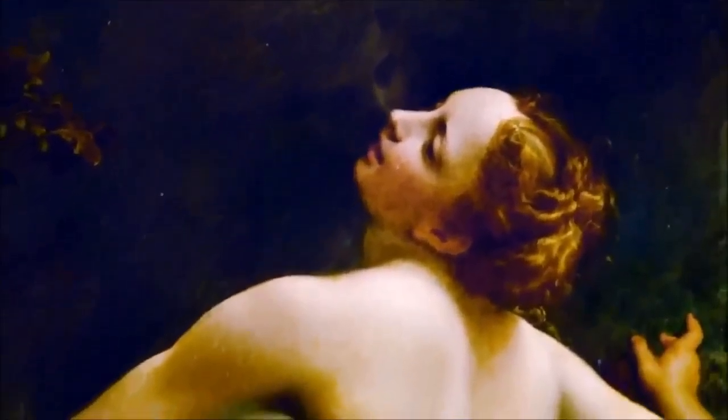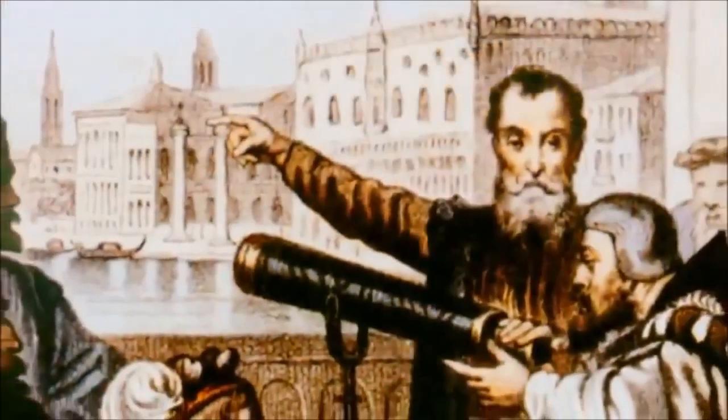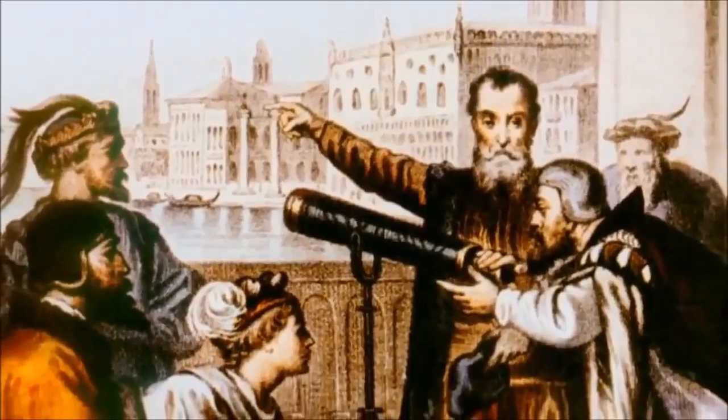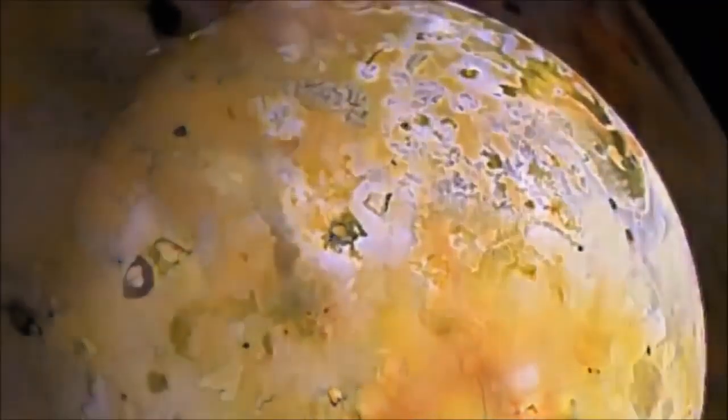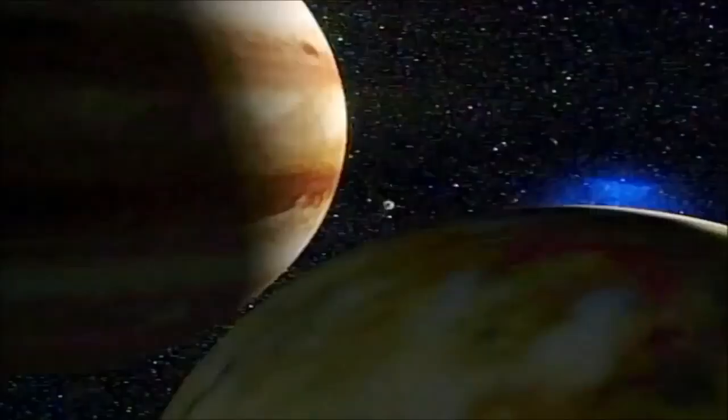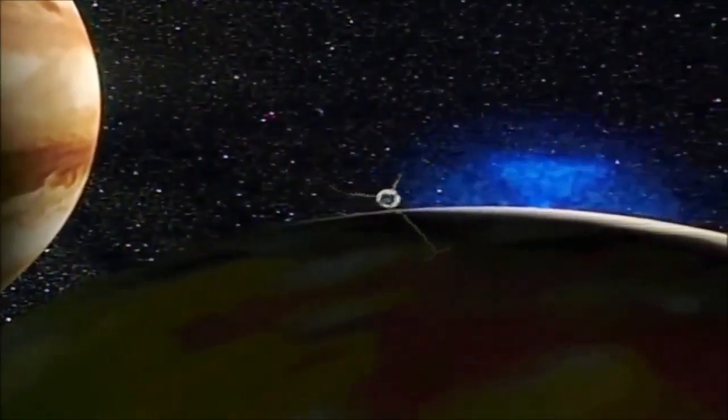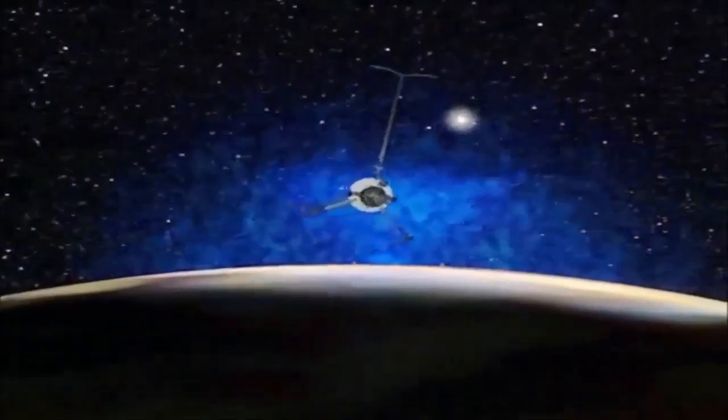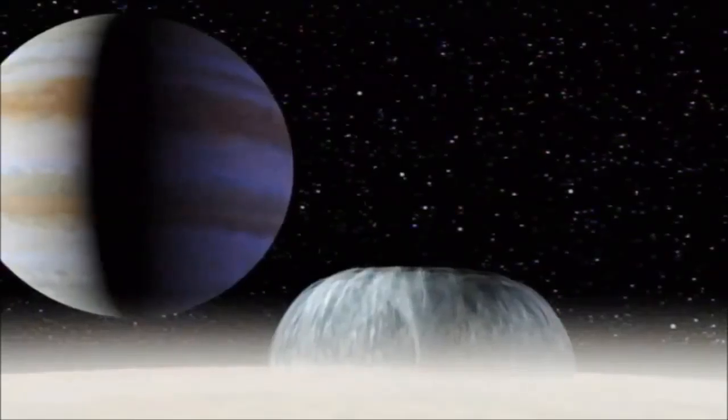Io, like all Jupiter's regular moons, is named after a lover of the god Jupiter from Roman mythology. It was discovered by Galileo in 1610. First photographed by Pioneer One in 1974 and again by Voyager One in 1979, its pulsating activity has puzzled and intrigued scientists for decades.